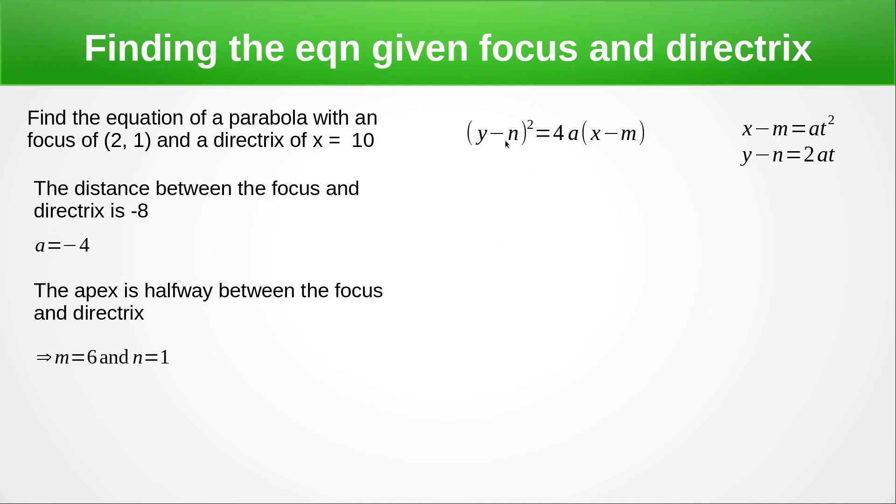Then we substitute these values into this equation to get the Cartesian form, and we substitute them into here to get the parametric form, making sure we keep these negative signs in.